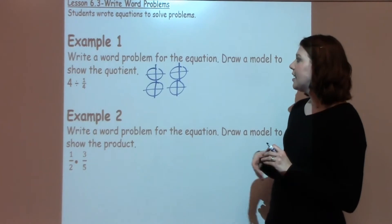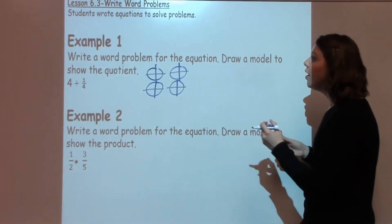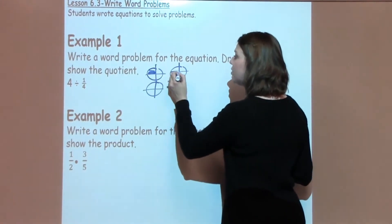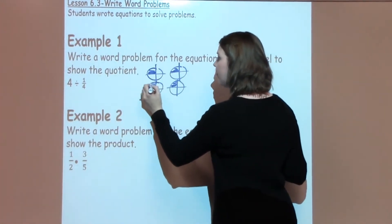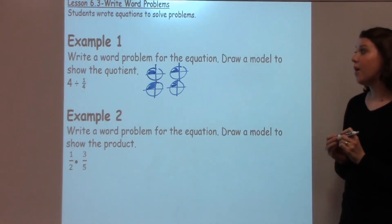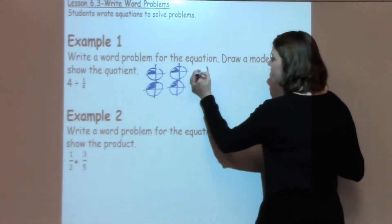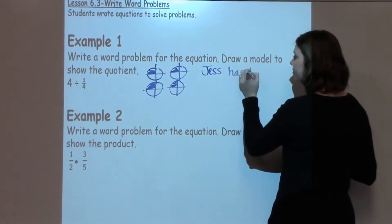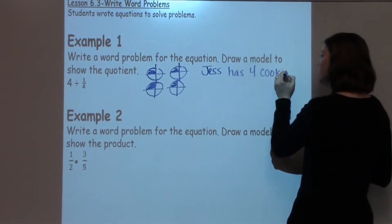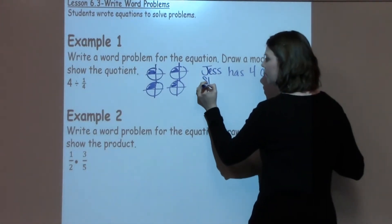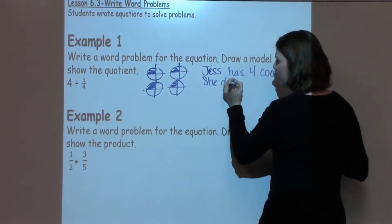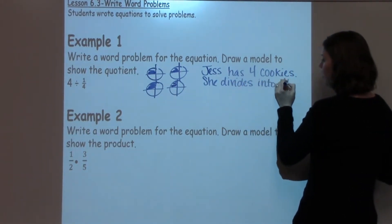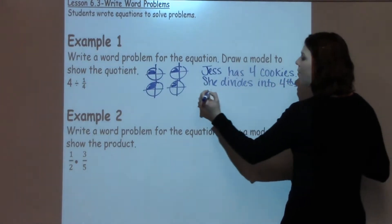Now it says that I need to go ahead after I've shown my picture. So I'm going to say I've got my 4 divided into 1 fourth. So here is 1 fourth of each of my cookies. Now it says to write the word problem. I could say that Jessica has 4 cookies. She divides them into 1 fourths. How many does she have?